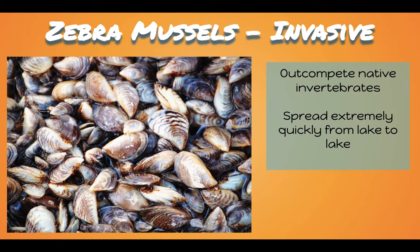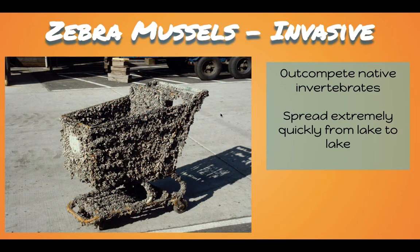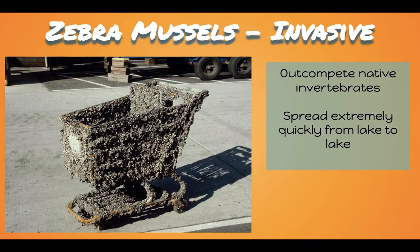Next, we have zebra mussels. They reproduce very, very quickly — they are mollusks and they out-compete native invertebrates for food. They can spread extremely quickly from lake to lake. There's an image of a shopping cart covered in zebra mussels; if you Google-search them, you'll see boats and boat motors completely covered. The way they spread is if you don't properly clean your boat when exiting one lake before going to another, you may transfer zebra mussels into the new lake, creating a new population. It's very important to follow local guidelines when fishing or swimming to make sure these invasive species do not spread further.